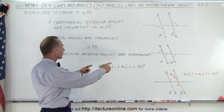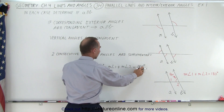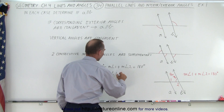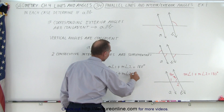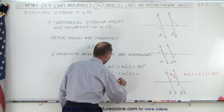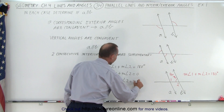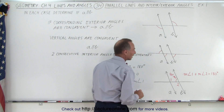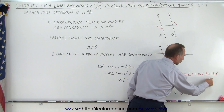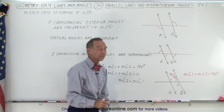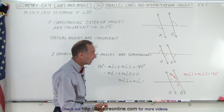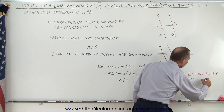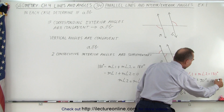Now I can subtract 180 degrees from each side, so I have: negative the measure of angle one plus the measure of angle two equals zero. Moving the term across, the measure of angle two equals the measure of angle one. Since the two angles are equal and their sum is 180 degrees, that can only be true if both angle one and angle two are 90 degrees.